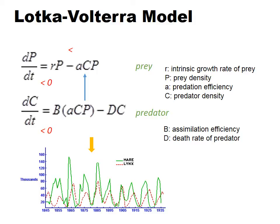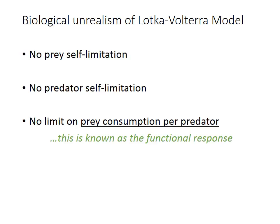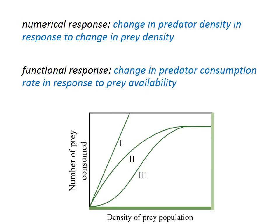While the model seems to accurately describe the lynx-hare population dynamics, it is based upon some faulty assumptions, including lack of self-limitation in both the prey and predator populations, and no limit on prey consumption per predator, which is known as the functional response. Going back to the Lotka-Volterra equations, the numerical response is the change in predator density in response to change in prey density. The functional response is the change in predator consumption rate in response to prey availability. There are three common types of functional responses, and we will examine the first two.